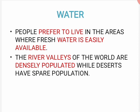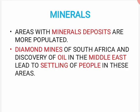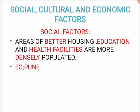Water: agar water easily available hai toh log rahenge, agar water easily available nahi hai — jaise desert areas — wahan population kam hogi. Minerals bhi agar easily available hain kisi area mein, toh population zyada hogi; jahan easily available nahi hain, wahan population kam hogi.